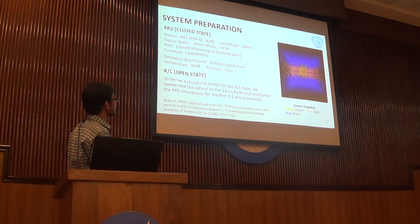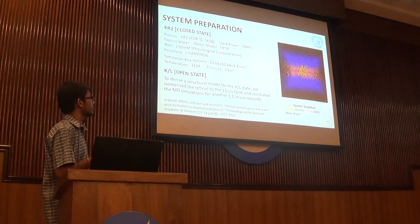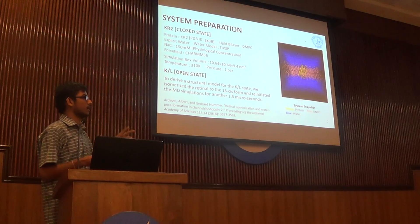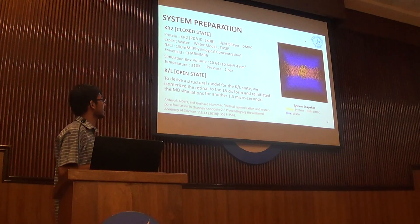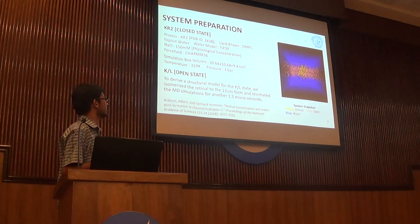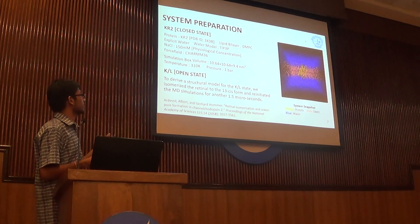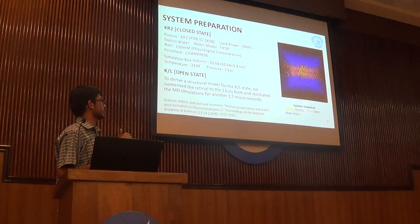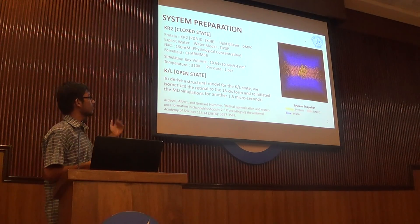This is how our system looks. For modeling the protein, we took the already curated model called 3x3b by a Japanese group. The lipid bilayer is DMPC. We used an explicit water model, specifically the TIP3P three-point water model with charges on three atoms, and only the Lennard-Jones potential on the oxygen atom. We used the CHARMM36 force field, and the retinal force field parameters were taken from the literature. The simulation box was 10 × 10 × 9 nanometers, with normal room temperature and 1 bar pressure. For simulating the open state, we derived the model by isomerizing the retinal to the 13-cis form and then re-running the simulations for another 1.5 microseconds.